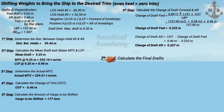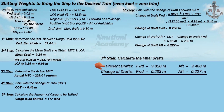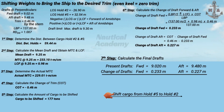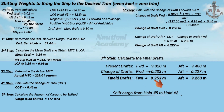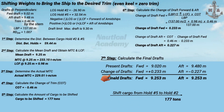Now let's calculate the final drafts. Since we are shifting cargo from the aft cargo hold to the forward cargo hold, the aft draft will decrease — so we subtract the change of draft aft — while the forward draft will increase, so we add the change of draft forward. The final forward draft is 9.253 meters and the final aft draft is also 9.253 meters. Therefore, we need to shift 177 tons of cargo from hold number five to hold number two to bring the ship to even keel, with final drafts of 9.253 meters, which comply with the draft limit of 9.30 meters.